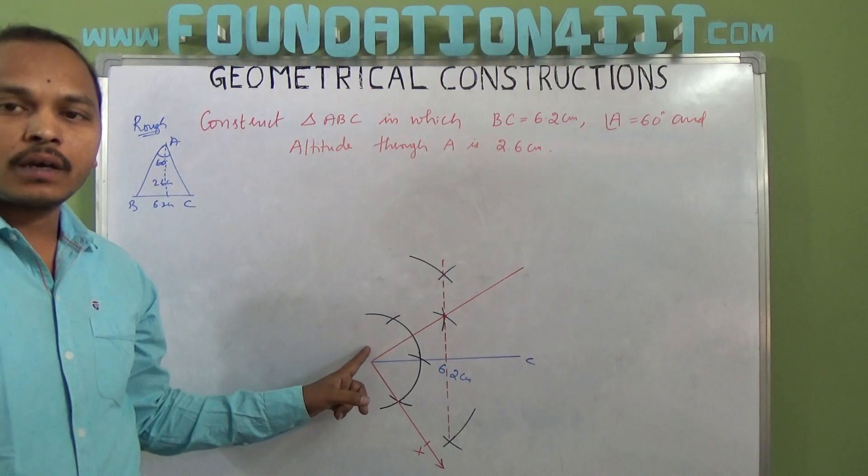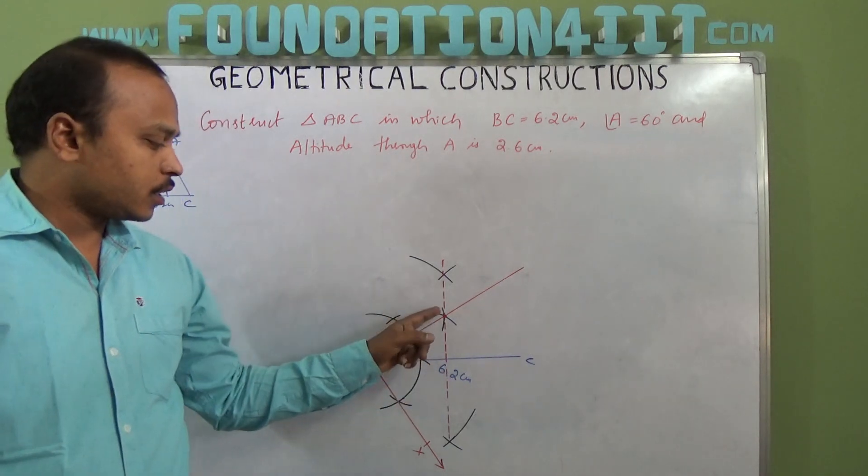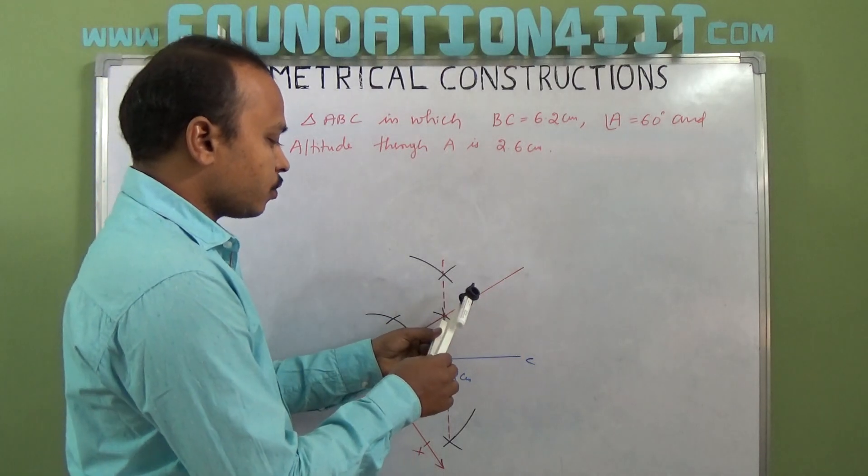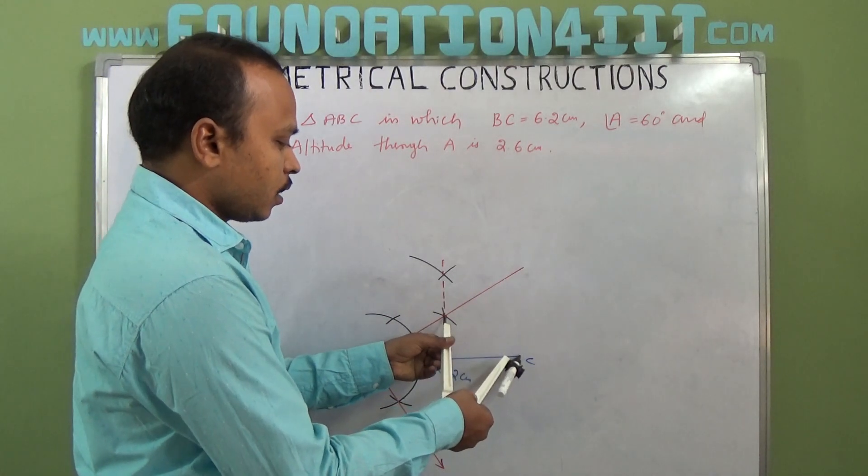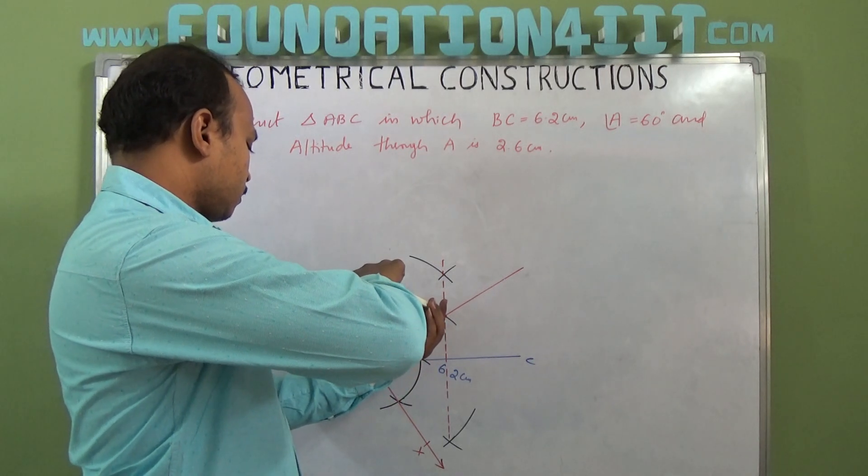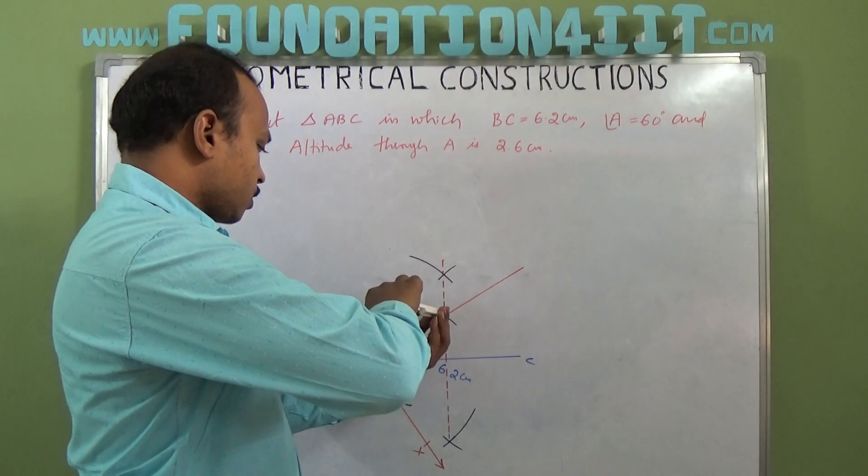Now take this point as center. With B as the radius, that means distance from center to B as radius, draw a circle. The distance from center to C and center to B should be the same. Draw the circle.